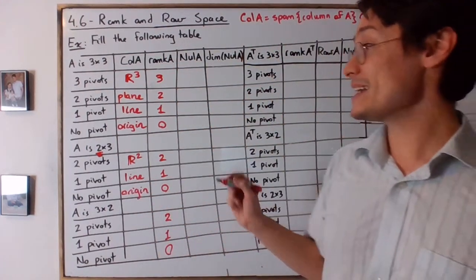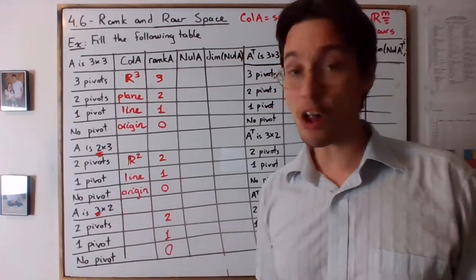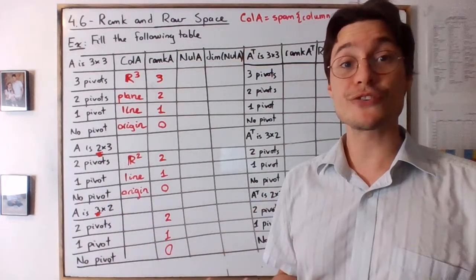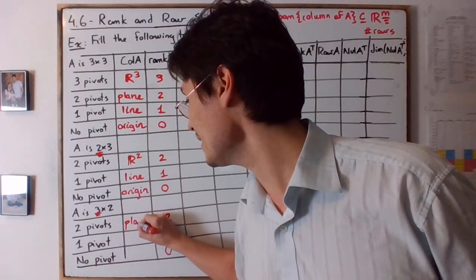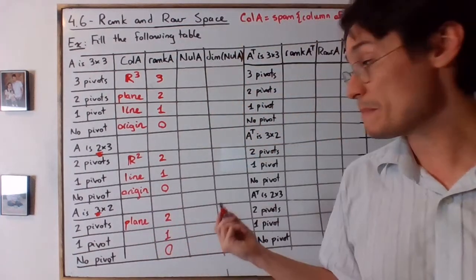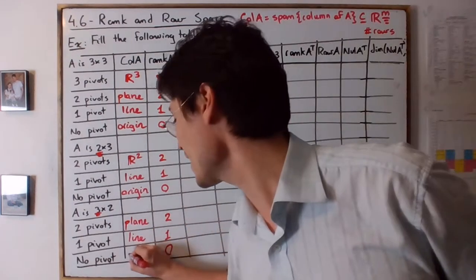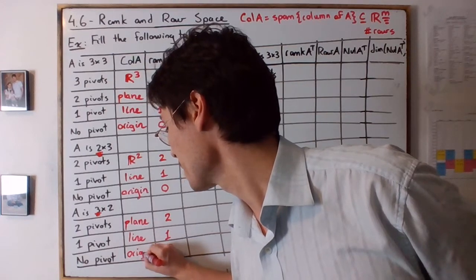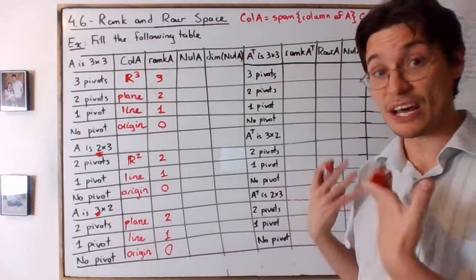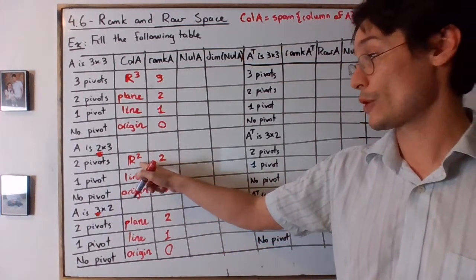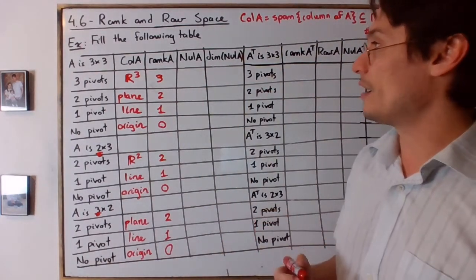If A is 3x2, then Col(A) is a subspace of R³. So two pivots means a plane in R³, one pivot means a line in R³, and no pivot is again the origin. Keep in mind: when I say 'plane' I mean a plane in R³, whereas when I say R² I mean the entire R², the entire set of vectors with two components.